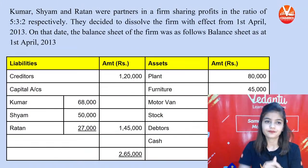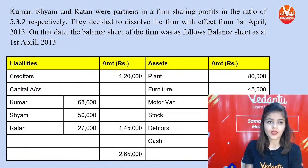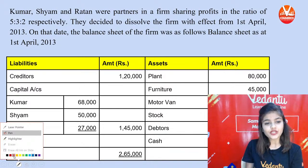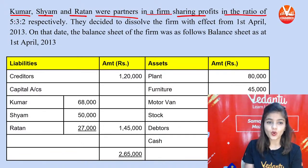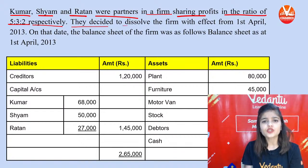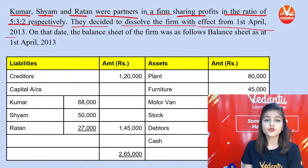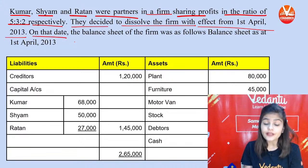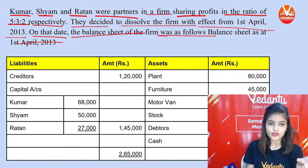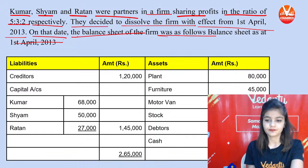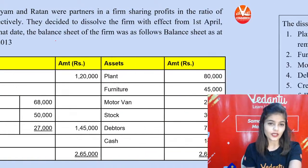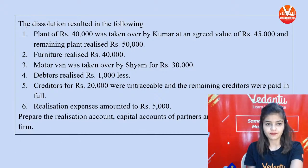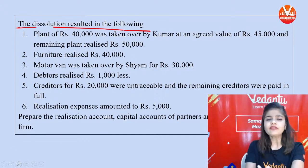Question 3: Kumar, Shyam, and Ratan were partners in a firm sharing profits in the ratio of 5:3:2 respectively. They decided to dissolve the firm with effect from 1st April 2013. On the date of dissolution, the balance sheet was provided. We need to prepare the Realization Account, Capital Account, and Bank Account.